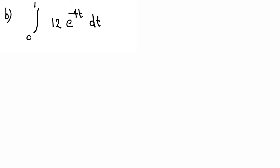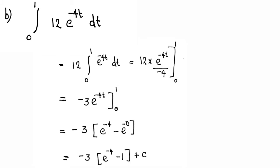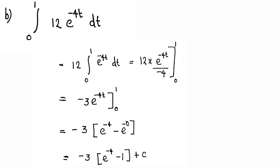Second question: integral from 0 to 1 of 12e raised to minus 4t dt. The constant 12 is taken outside, giving 12 times the integral from 0 to 1 of e raised to minus 4t dt. Since the integral of e raised to kx is e raised to kx divided by k, this becomes 12 times e raised to minus 4t divided by minus 4, evaluated from 0 to 1. That is minus 3 times e raised to minus 4t. Applying limits: minus 3 times (e raised to minus 4 minus e raised to 0). Since e raised to 0 is 1, the answer is minus 3 times (e raised to minus 4 minus 1).